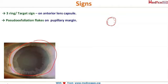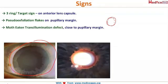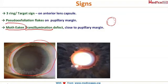Another important sign is the moth-eaten trans-illumination defect. In pigmentary glaucoma, it is a radial trans-illumination defect, but here in pseudo-exfoliation, the defect is of an irregular, moth-eaten pattern — very irregular and patchy, as you can see in this image.